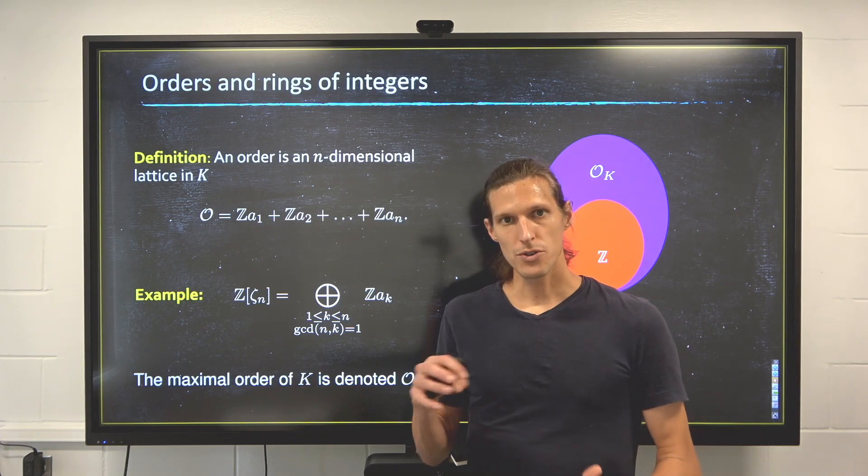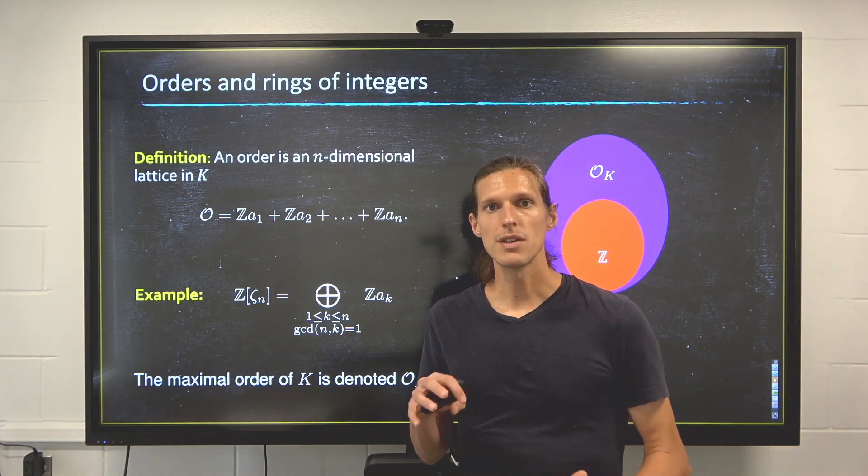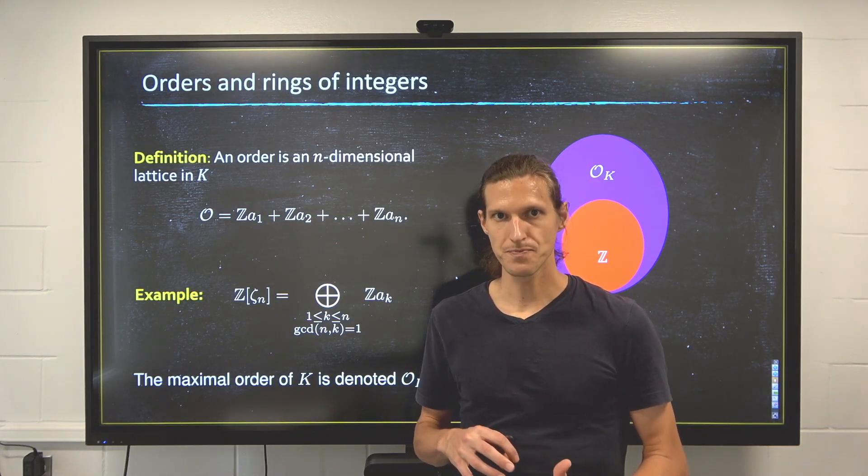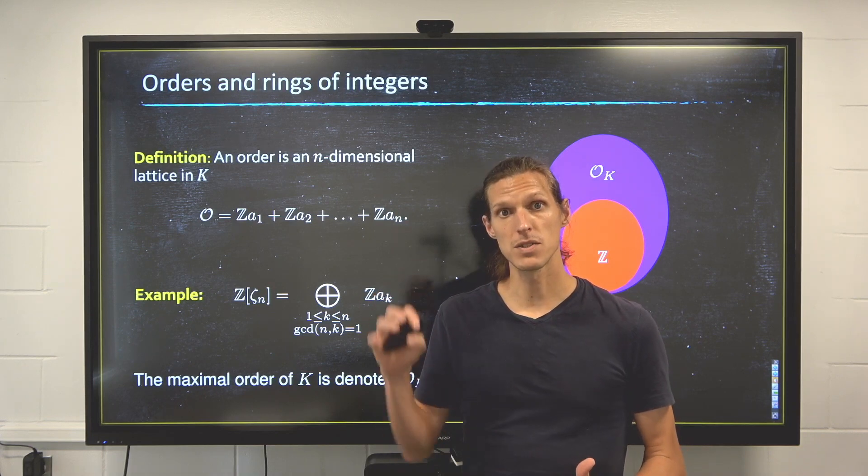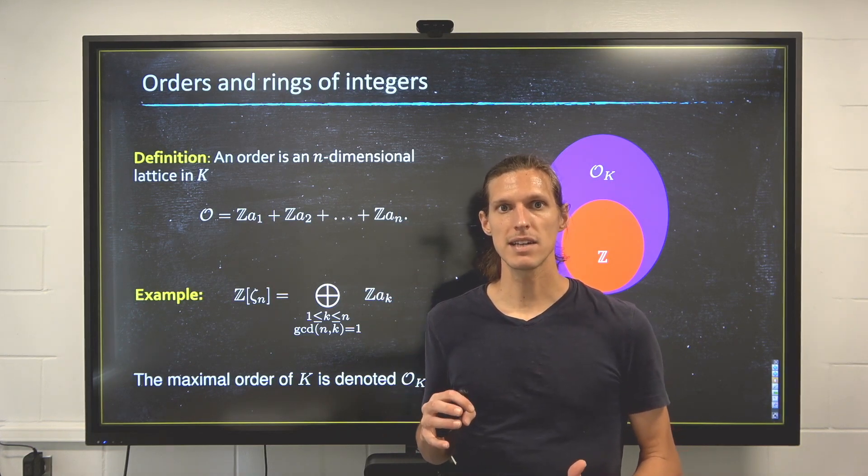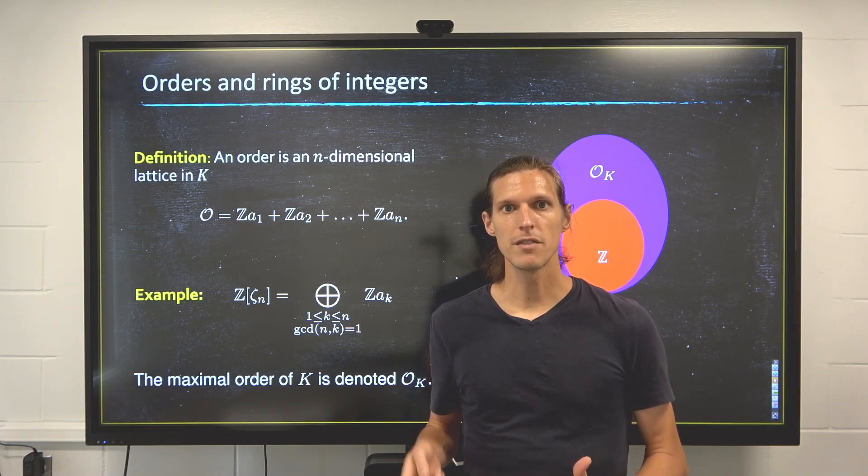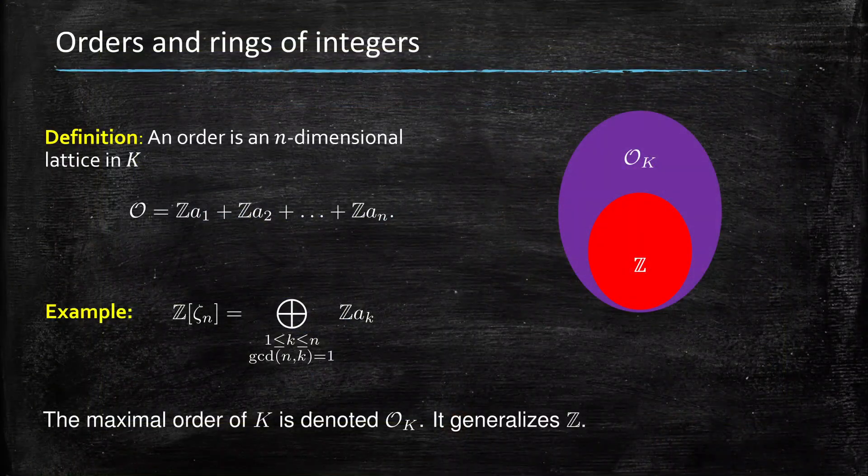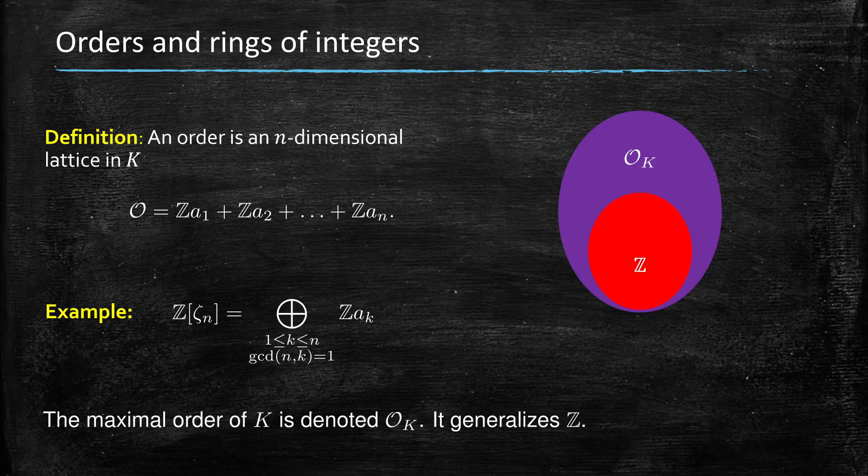Now those orders, they're partially ordered by inclusion, and particularly one of them stands on top, there's a maximal order. And the maximal order is also called the ring of integers. And the ring of integers generalizes the notion of integers. So for example, if Z is the ring of integers of the trivial number field Q, then that maximal order here is the ring of integers, what plays the role of the integers in a number field of the form Q of alpha.